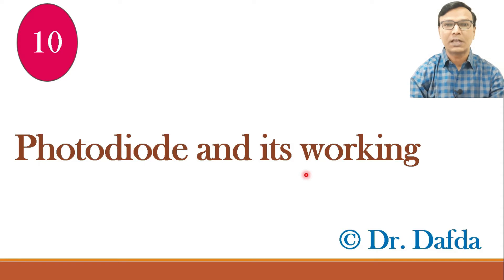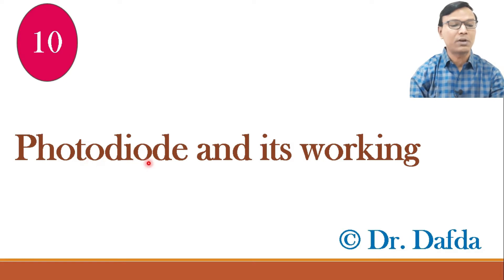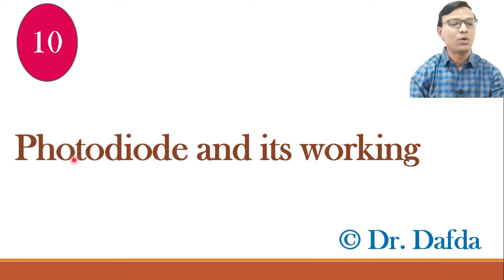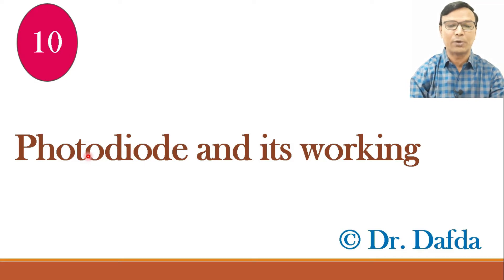Starting with the name — everything is there in the name. Photodiode consists of two terms: photo plus diode. Diode, as I have already told you in previous video lectures, means two electrodes — di means two and ode means electrodes. A device that has two electrodes, anode and cathode, is called a diode. Photodiode — photo means a diode that works on photons or light falling on it.